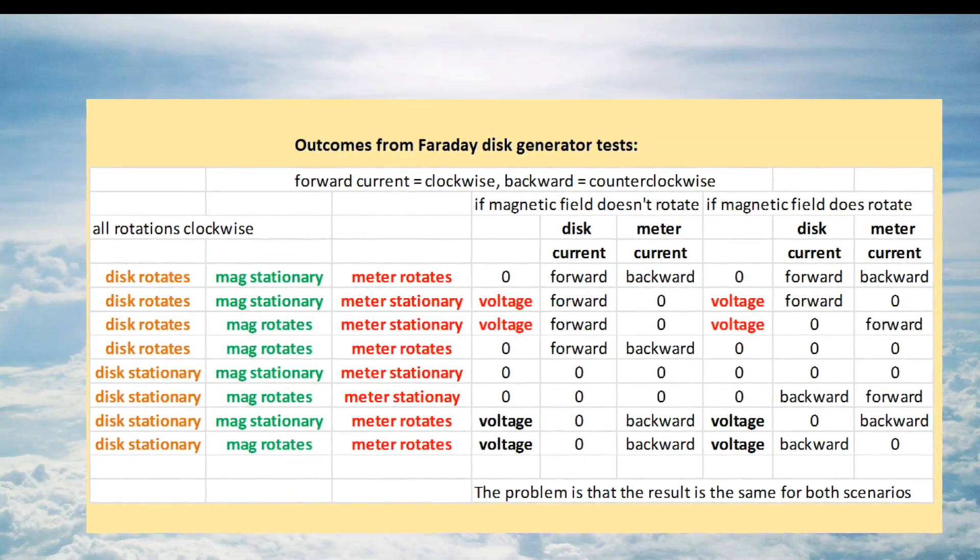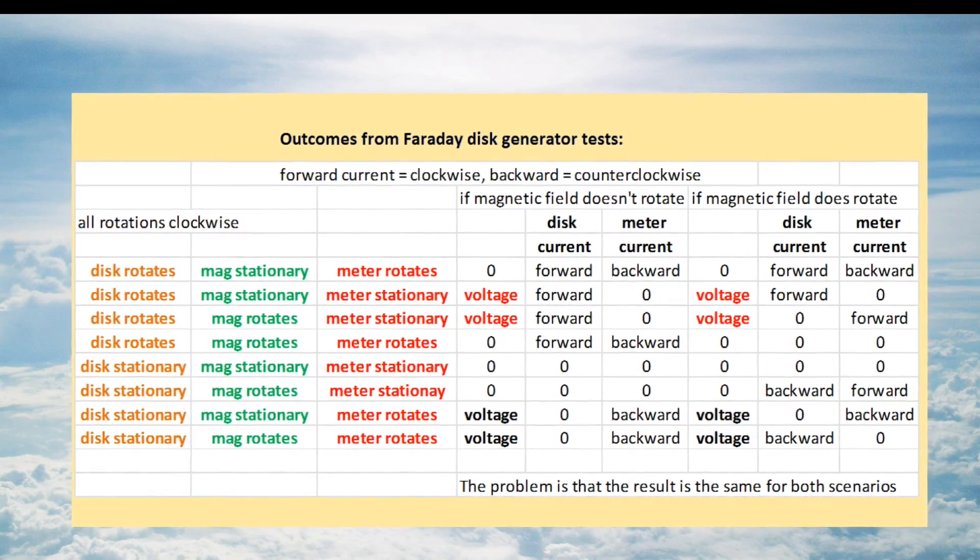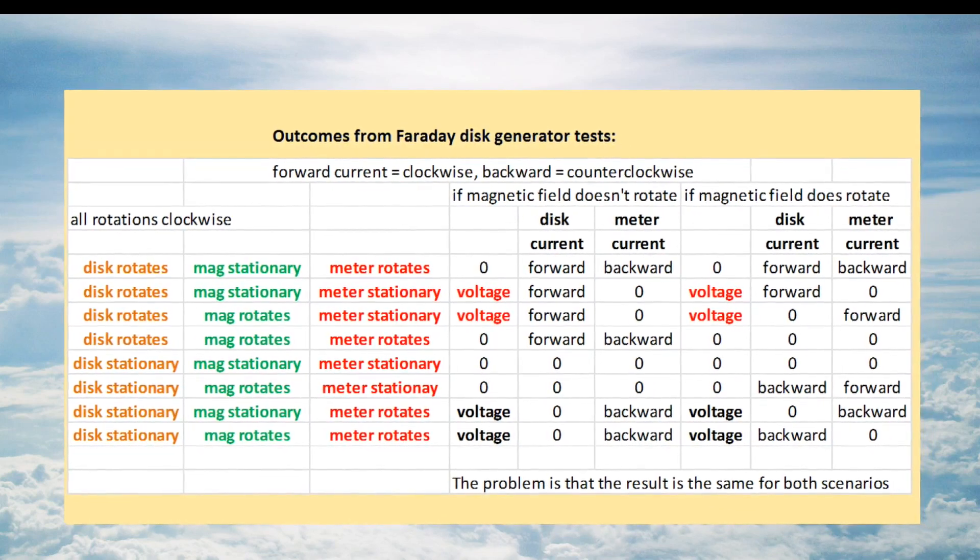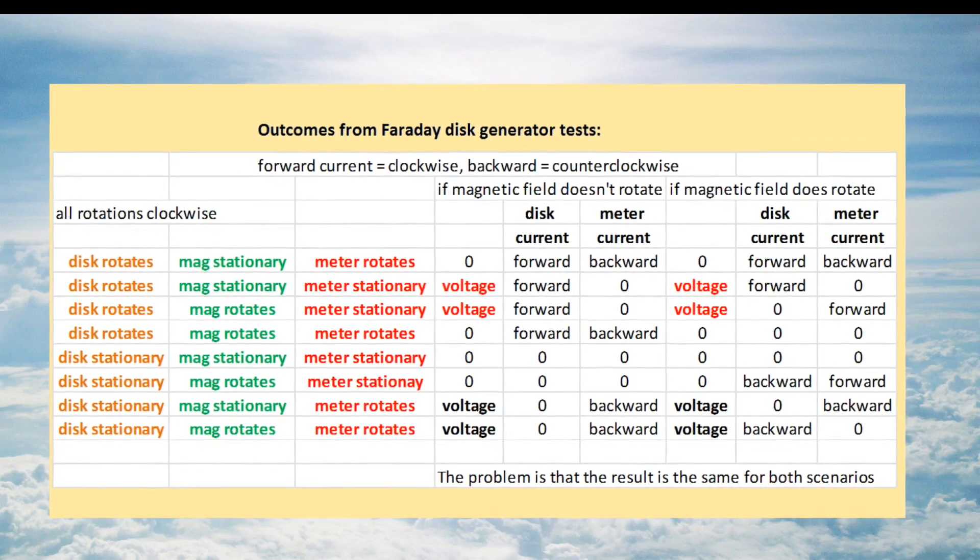The problem with the generator as currently designed is that for the eight possible tests that we can perform, the outcomes will be identical if the magnetic field rotates or not. So we can't solve the dilemma using closed circuits.